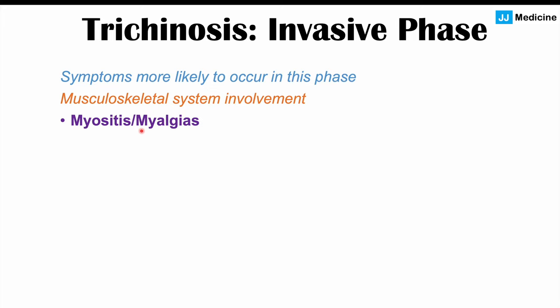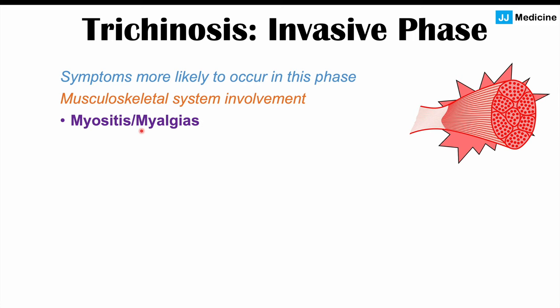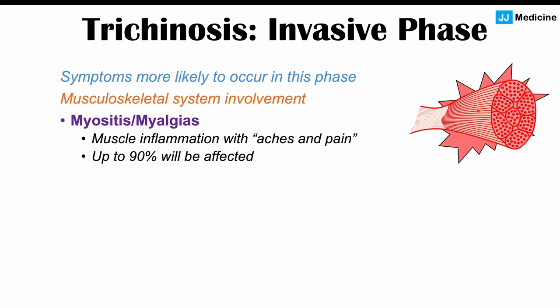Myositis and myalgias are inflammation of the skeletal muscles. If there are encysted larvae in the striated skeletal muscle, that leads to inflammation and the patient will complain of aches and pains in the muscles. Patients with musculoskeletal involvement are 90% likely to have myositis and myalgias — if they have invasion into their skeletal muscle, they are almost certainly going to have these symptoms.